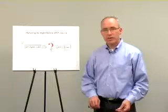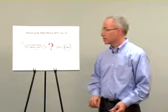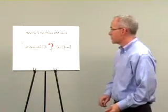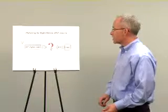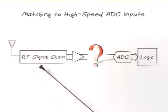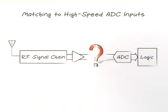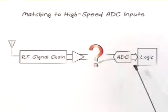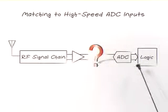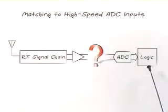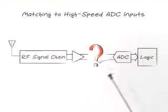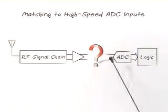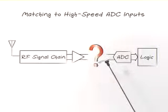In any high-frequency signal chain like communication receivers or a spectrum analyzer, there is a high-frequency portion of the design and a baseband section of the design where the signal is converted to the digital domain. The two portions of the design are stitched together at the ADC inputs.